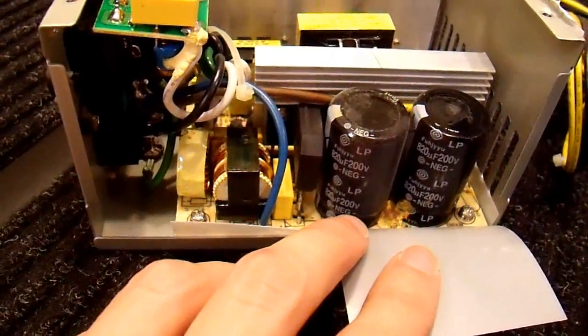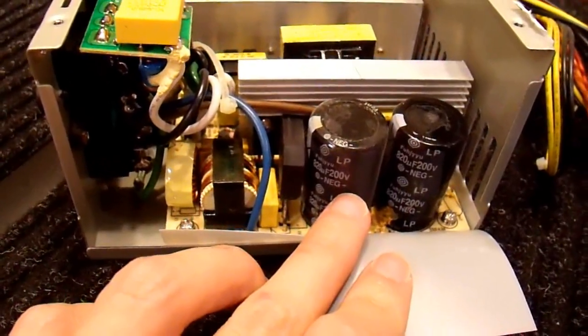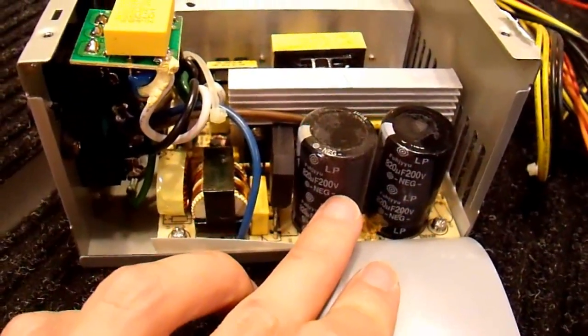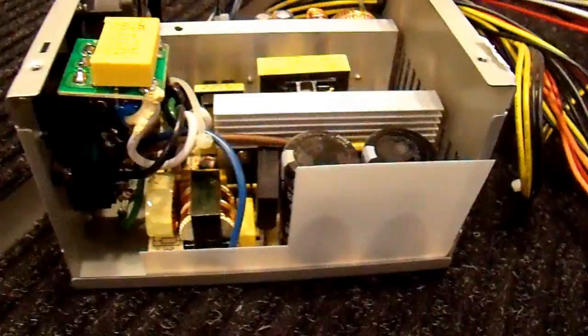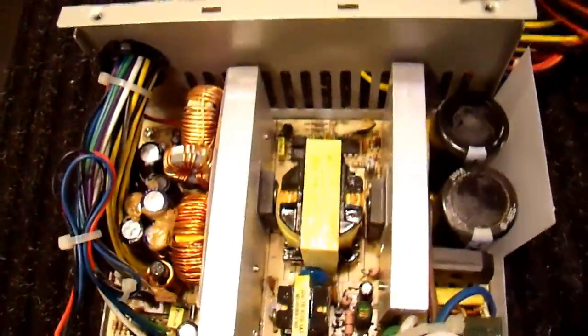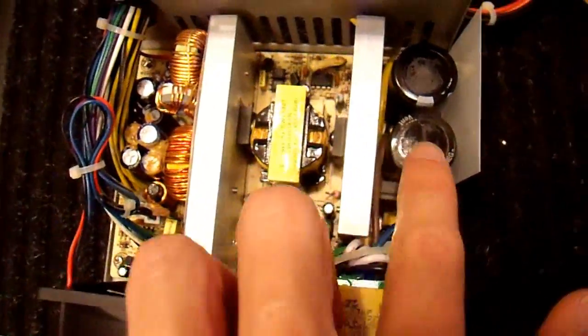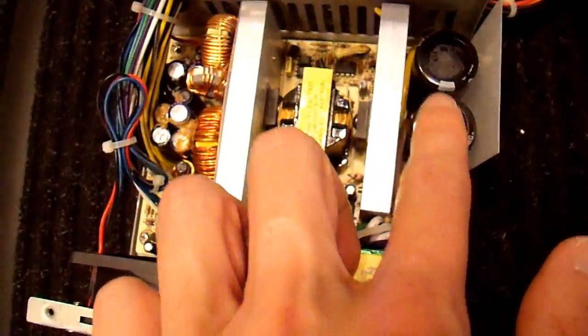And from there it would run through a transformer, through some active circuitry, some transistors, and into a 450 volt transistor, or 450 volt capacitor. And from there the rest of the power supply would be about the same. But that stuff doesn't exist in here. Going back to a top view.